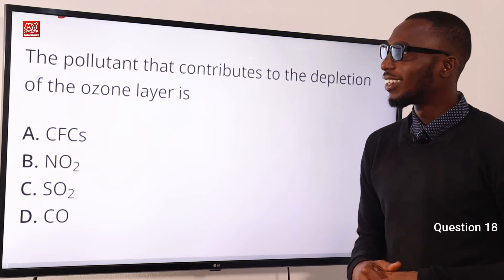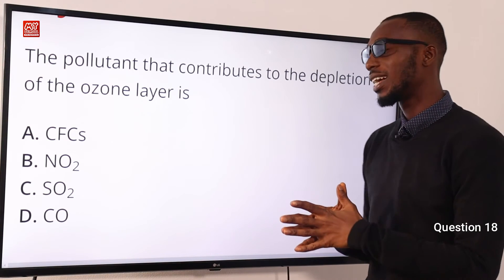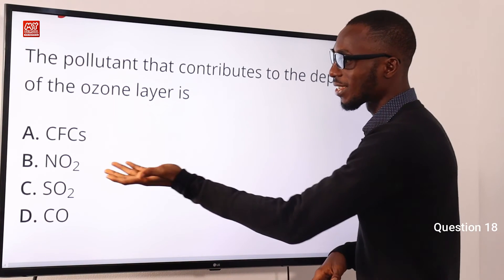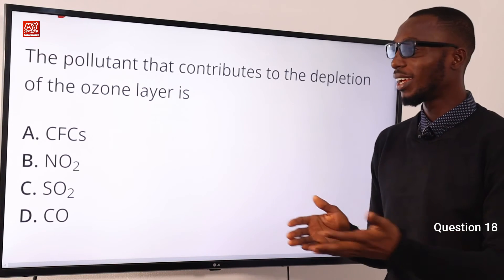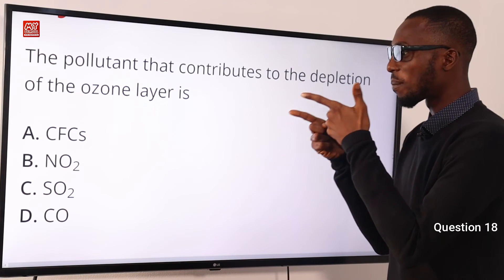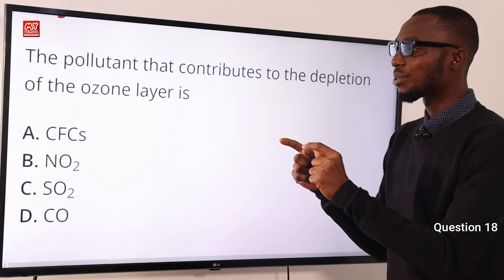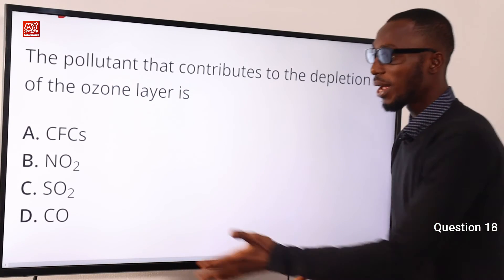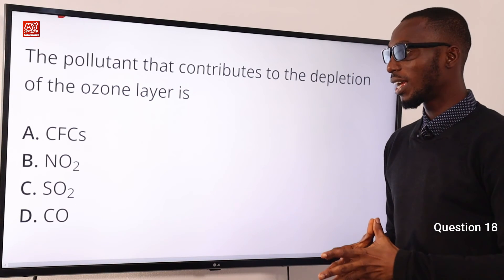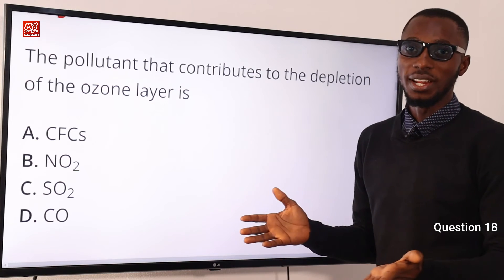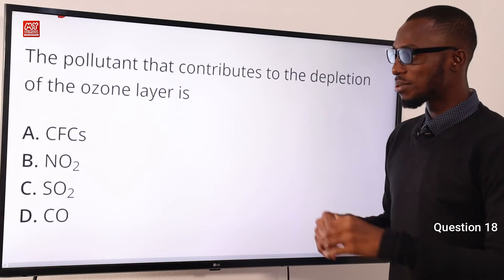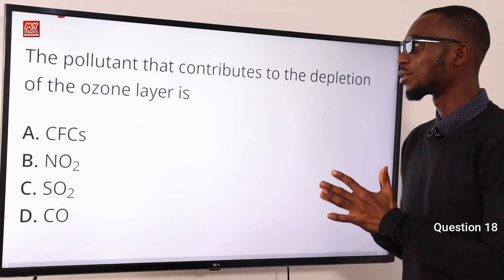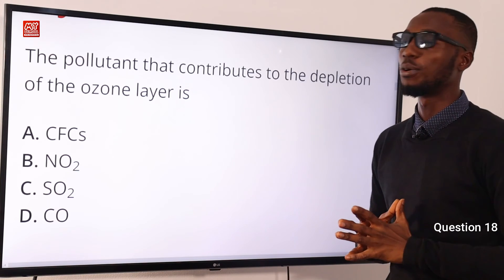Question 18. The pollutant that contributes to the depletion of the ozone layer is what? It's actually CFCs — chlorofluorocarbons. Nitrogen dioxide does not attack the ozone layer directly; it is nitrogen monoxide that goes up and does the damage. Sulfur dioxide causes acid rain, not direct ozone layer depletion. So the correct option here is CFCs, chlorofluorocarbons — they actually lead to the depletion of the ozone layer.